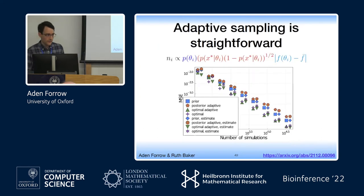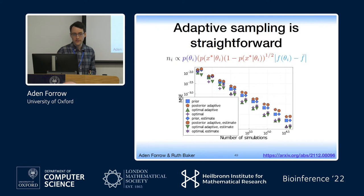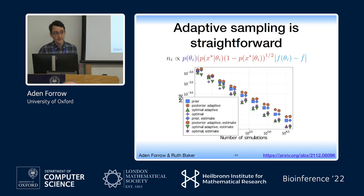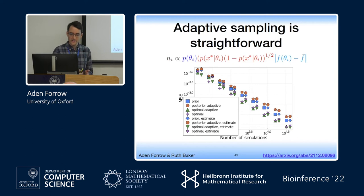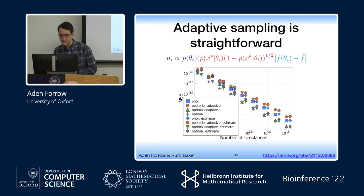Just a few complications for implementing this in practice. One is that the optimal distribution depends on things we don't know in the first place — we don't know the likelihood, and we definitely don't know the posterior mean of f. But in the discrete case it's fairly straightforward to implement this as an adaptive scheme where you do some simulations, get an initial estimate of your likelihood and function expectation, and use that to decide where to do future simulations. The green and purple lines — optimal from the beginning versus adapting — perform pretty similarly in examples.